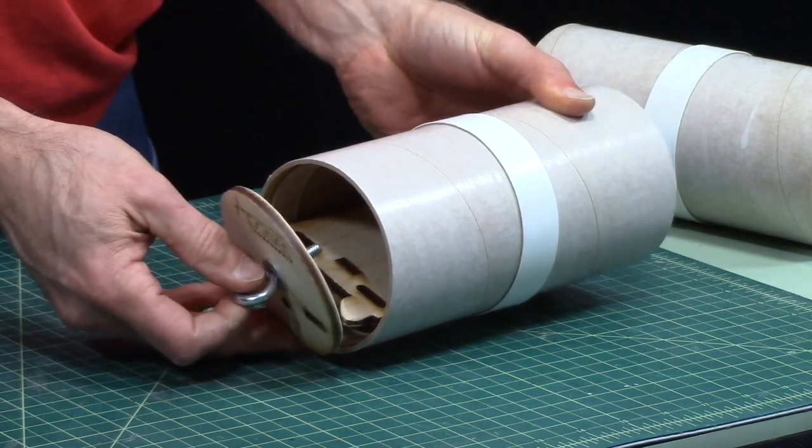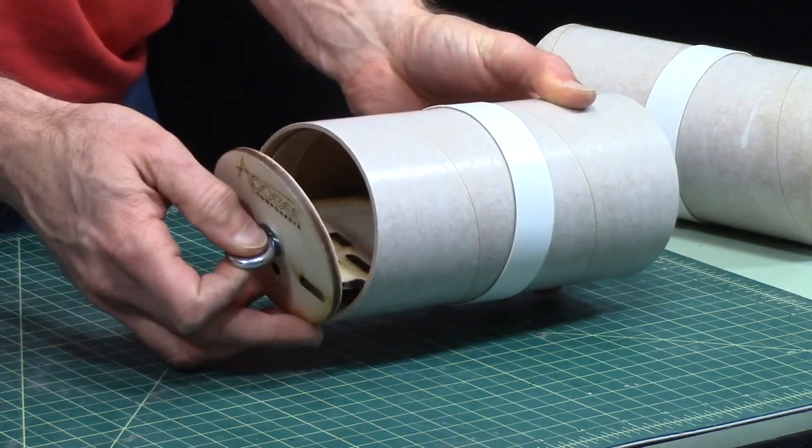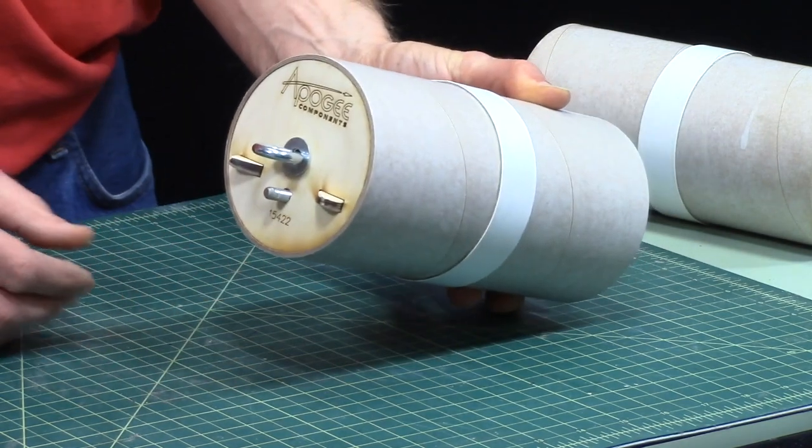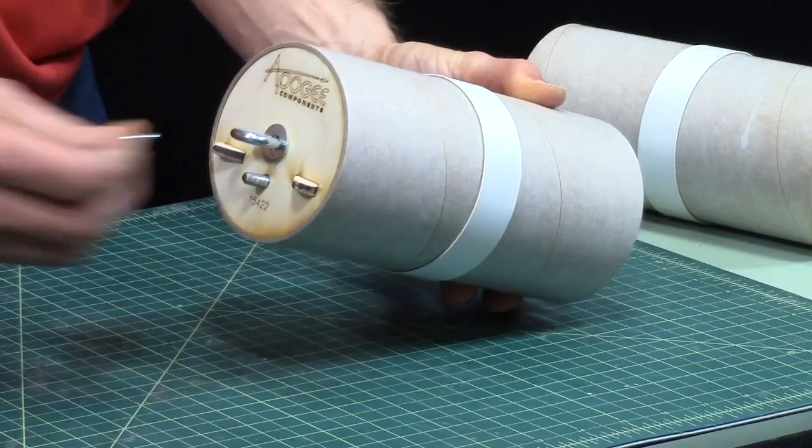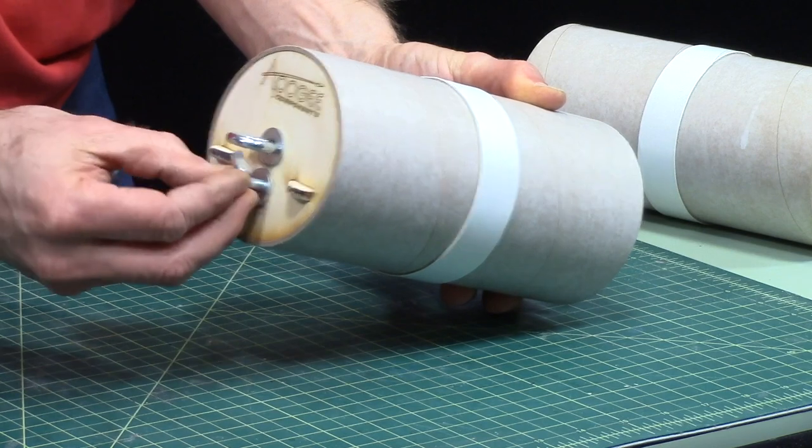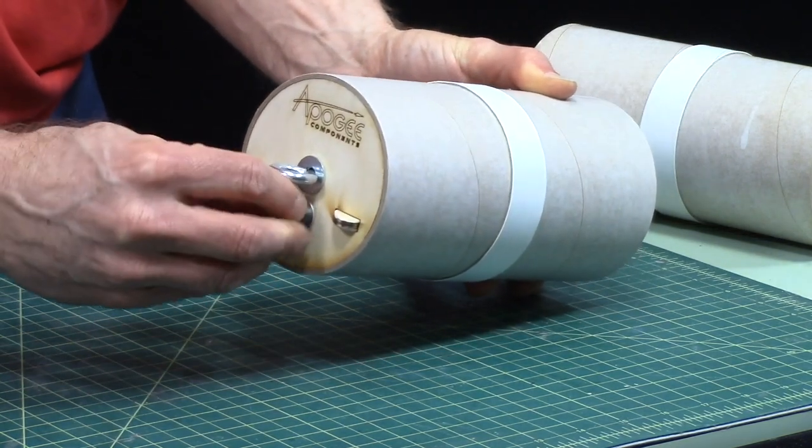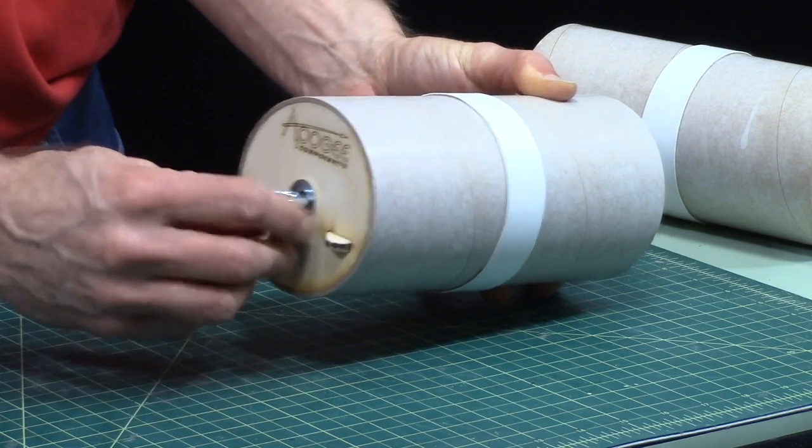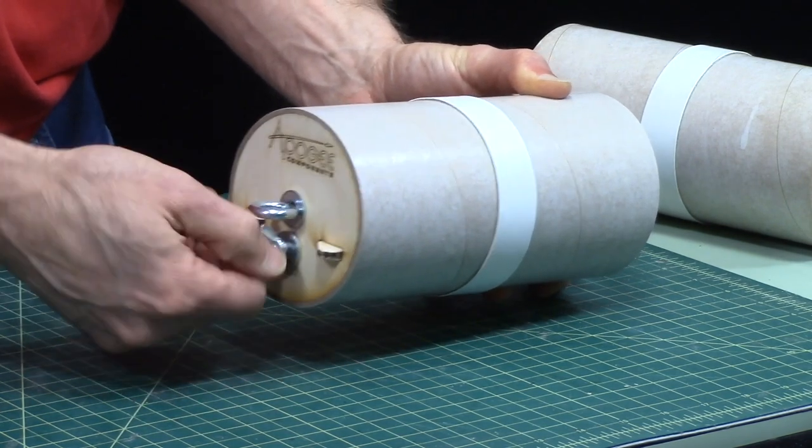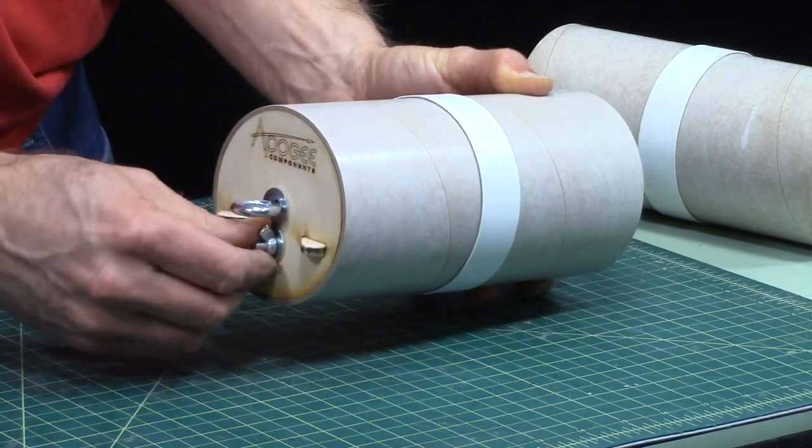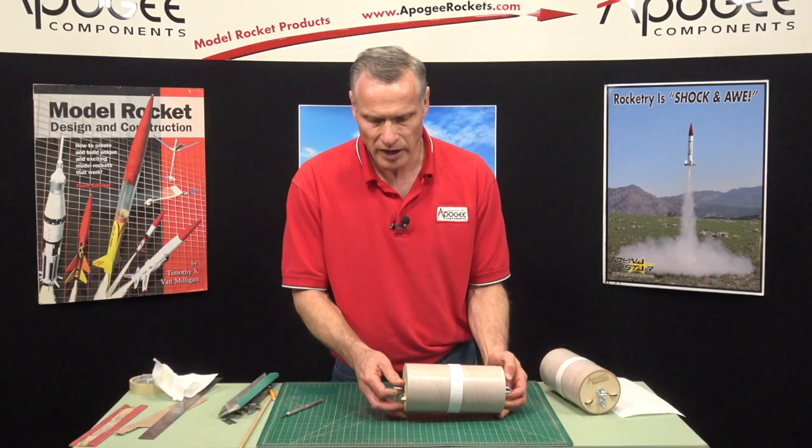Again find the threaded rod first and then find the slots, and it just lines right up. And then to finish it out, you'll put the washer on and then the final wing nut. Like that.